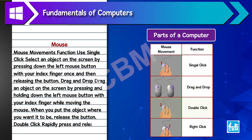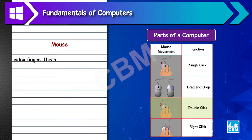7. Double click - rapidly press and release the left mouse button twice with your index finger. This action opens a file, folder or document.